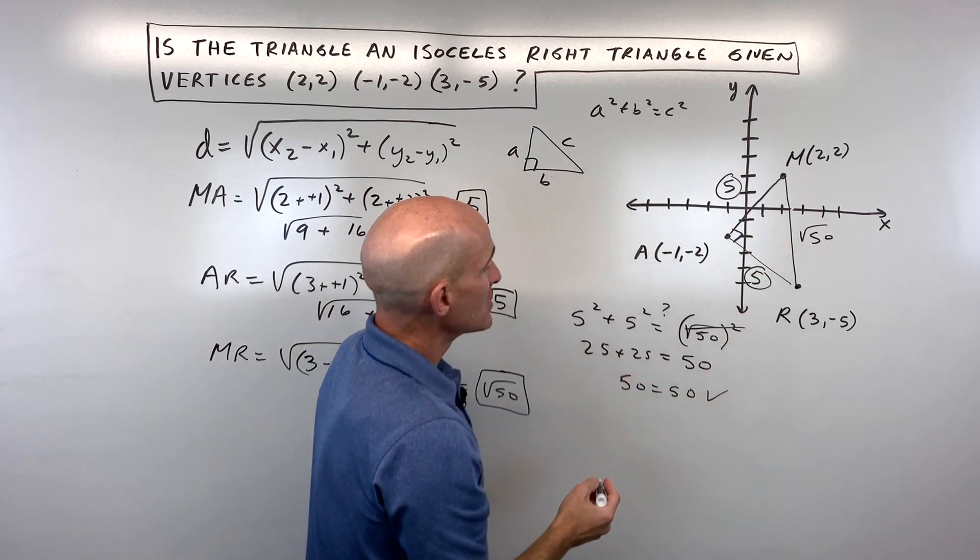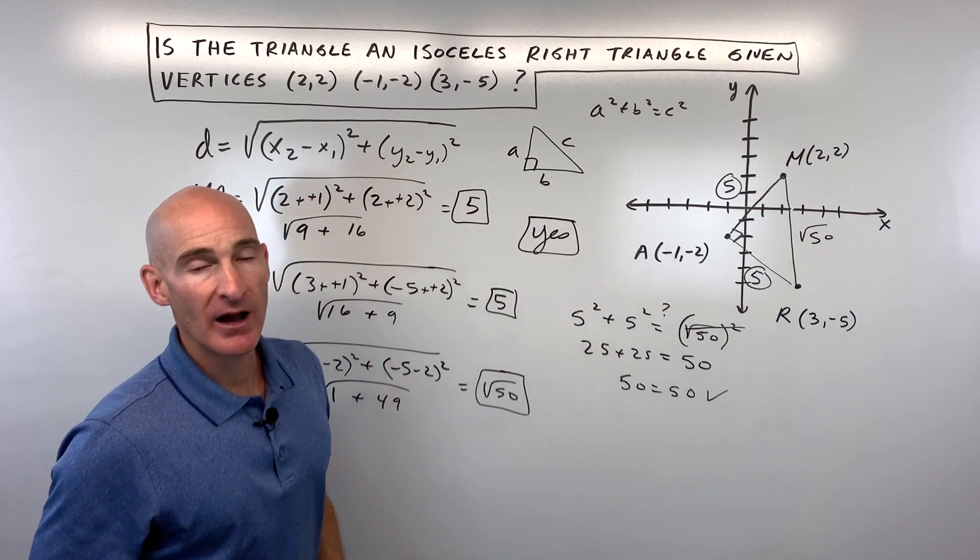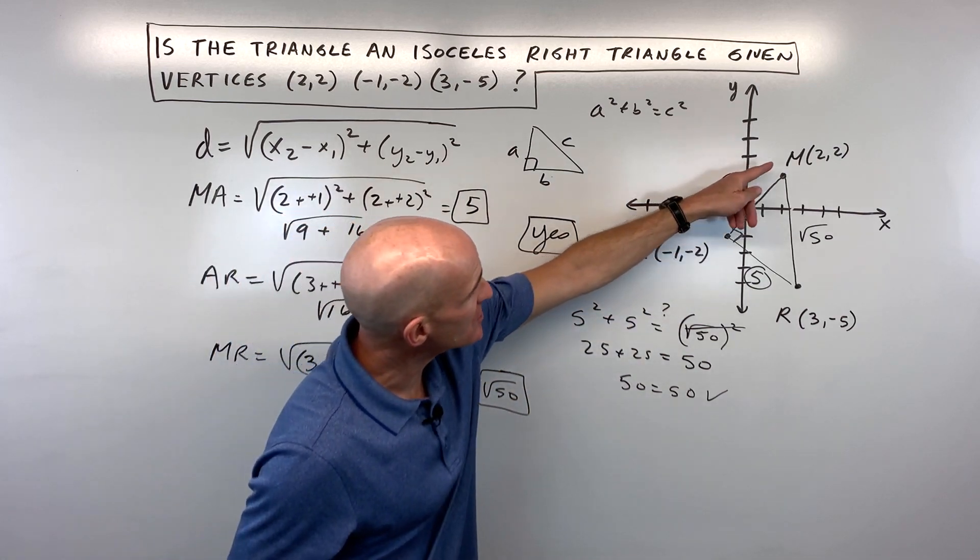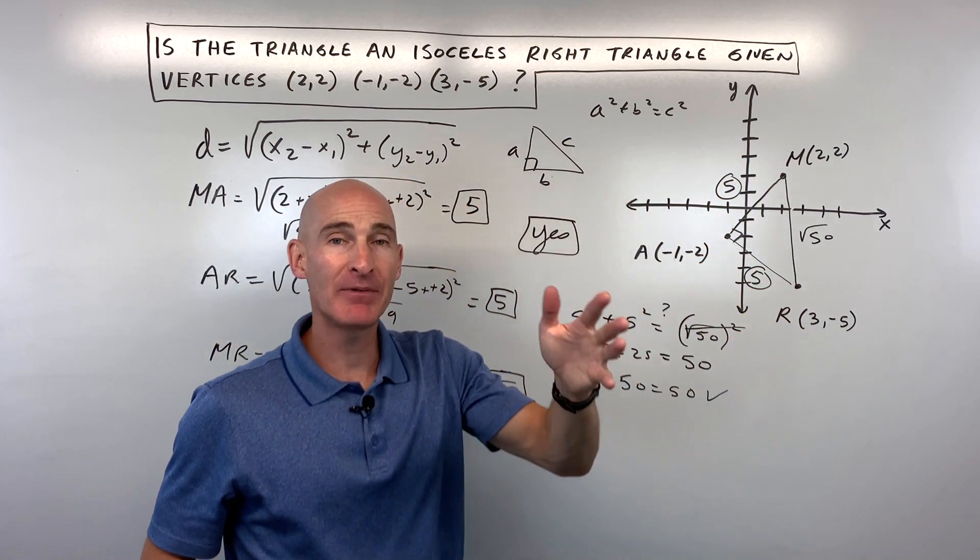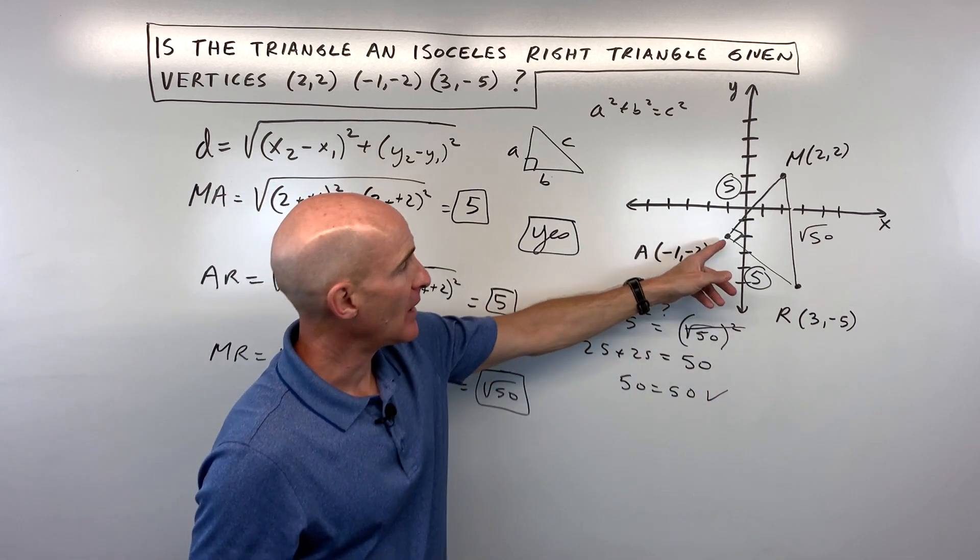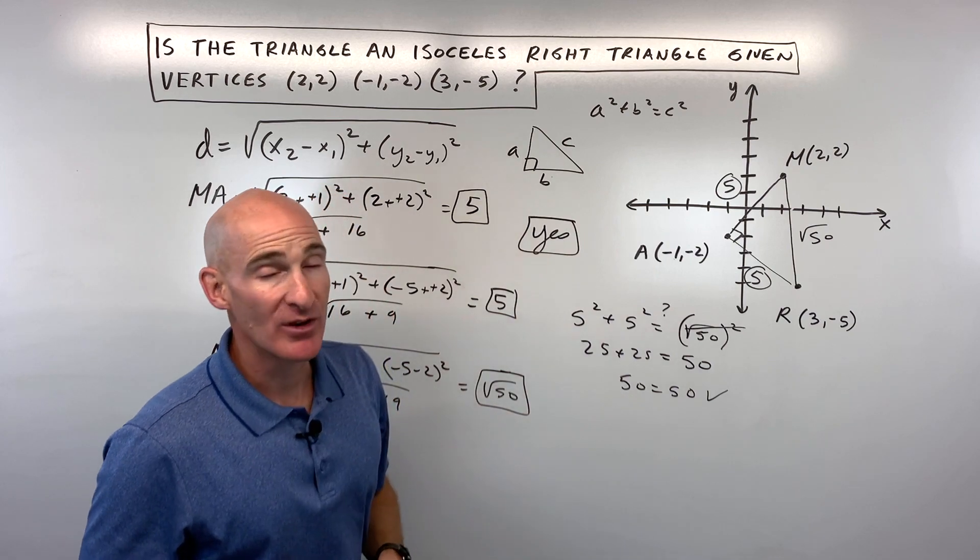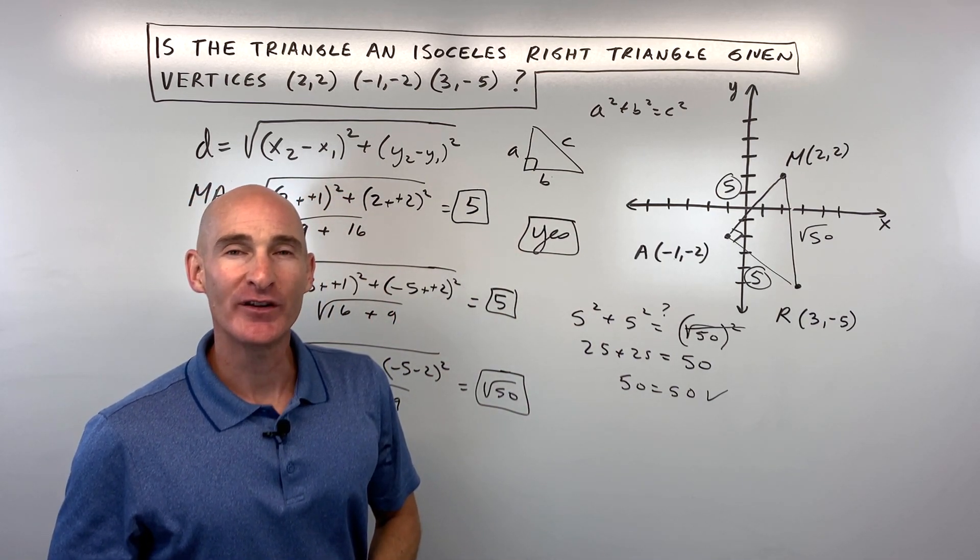So in this case we would say yes, this is an isosceles right triangle. Now there's another way to do this problem: you could find the slope of MA and the slope of AR, and if they're opposite reciprocals of each other, that would tell you this is a right angle. But in this case we just used the Pythagorean theorem. Great job if you were able to follow this example, I'll see you over in some of my other videos.